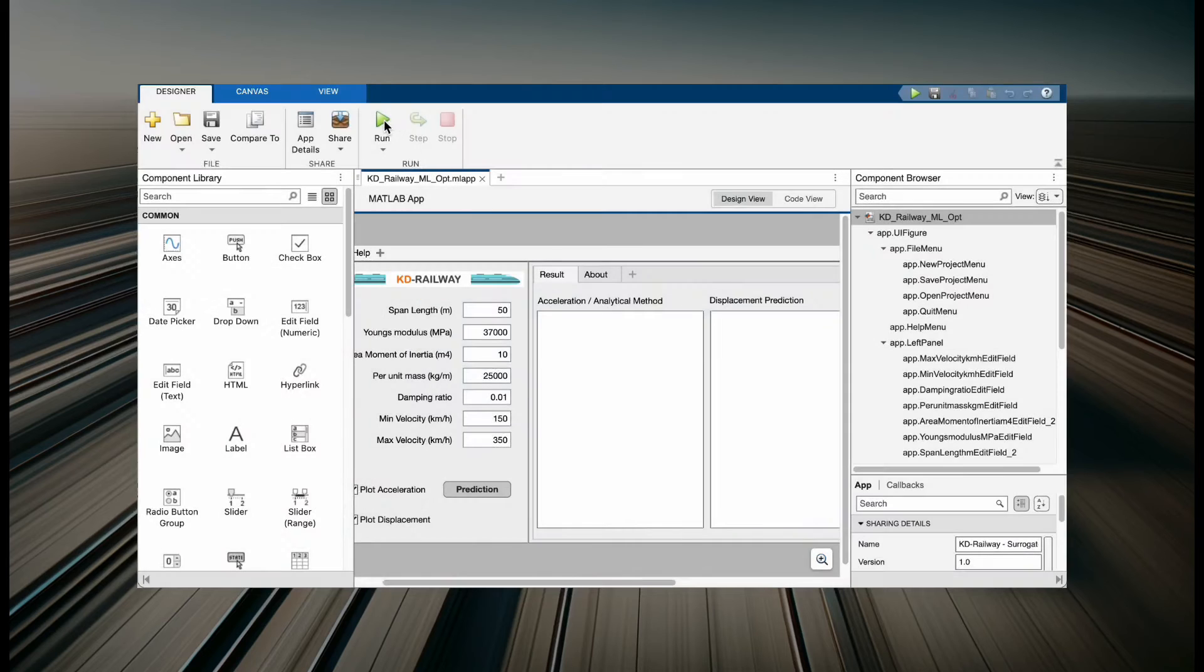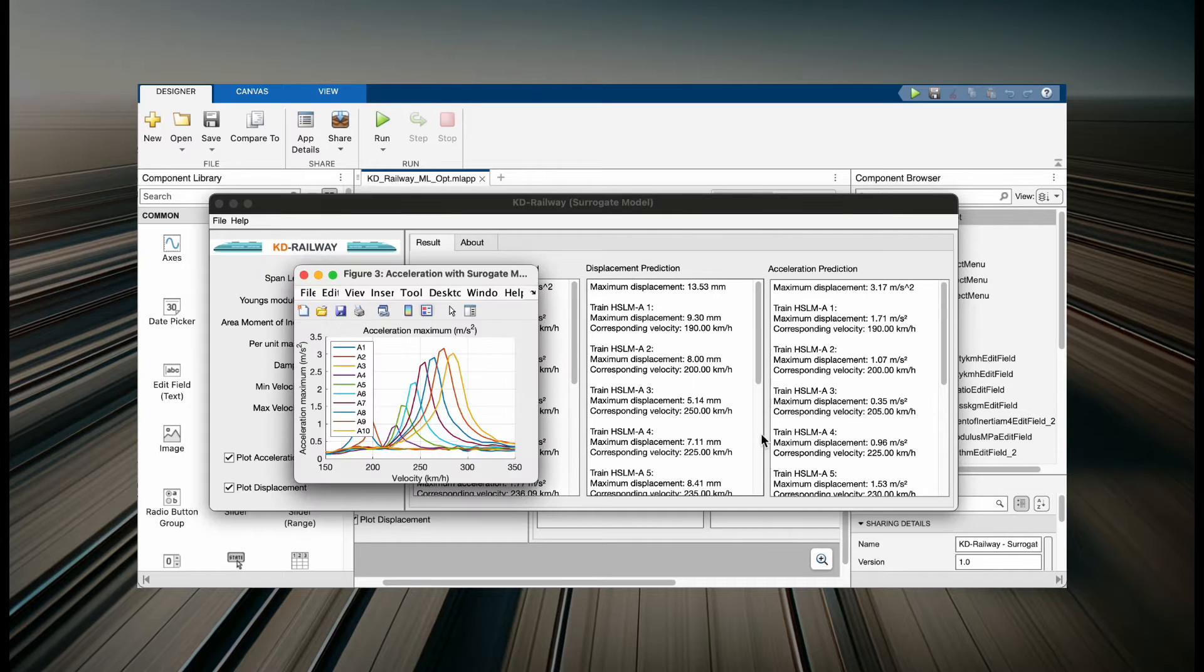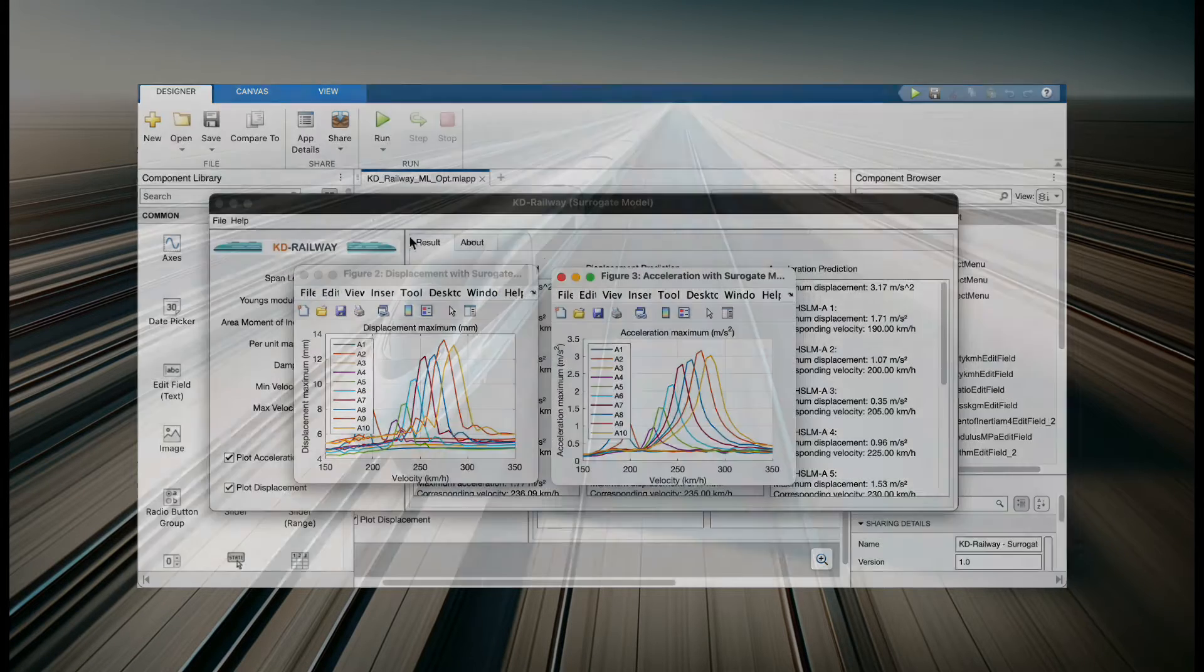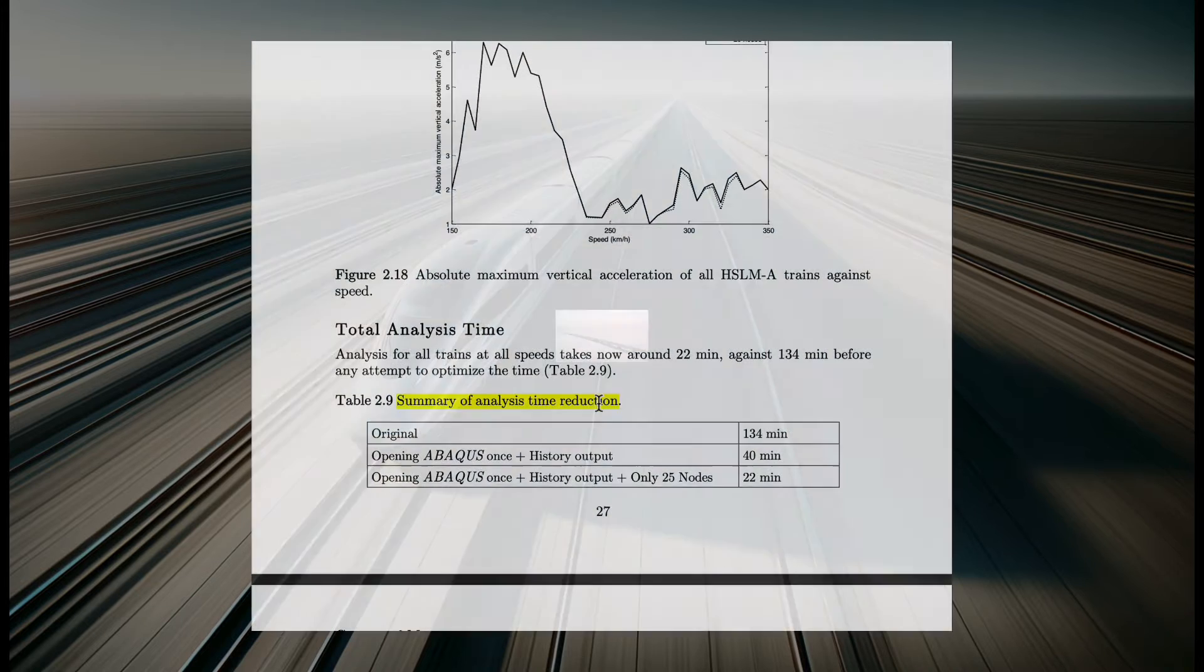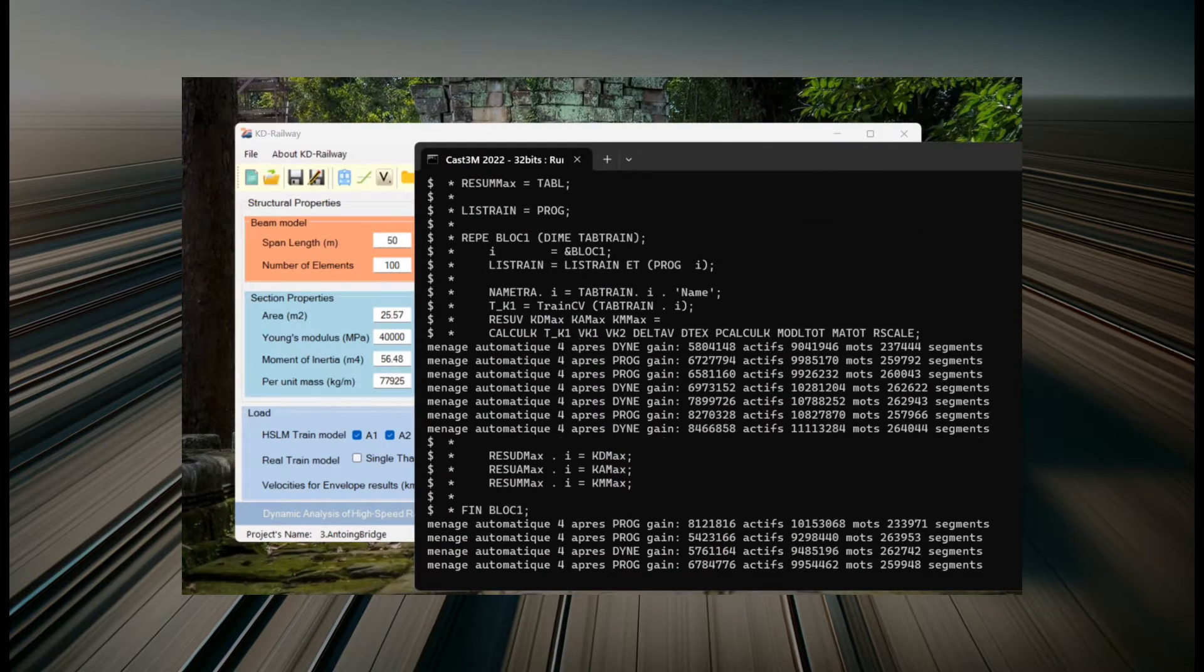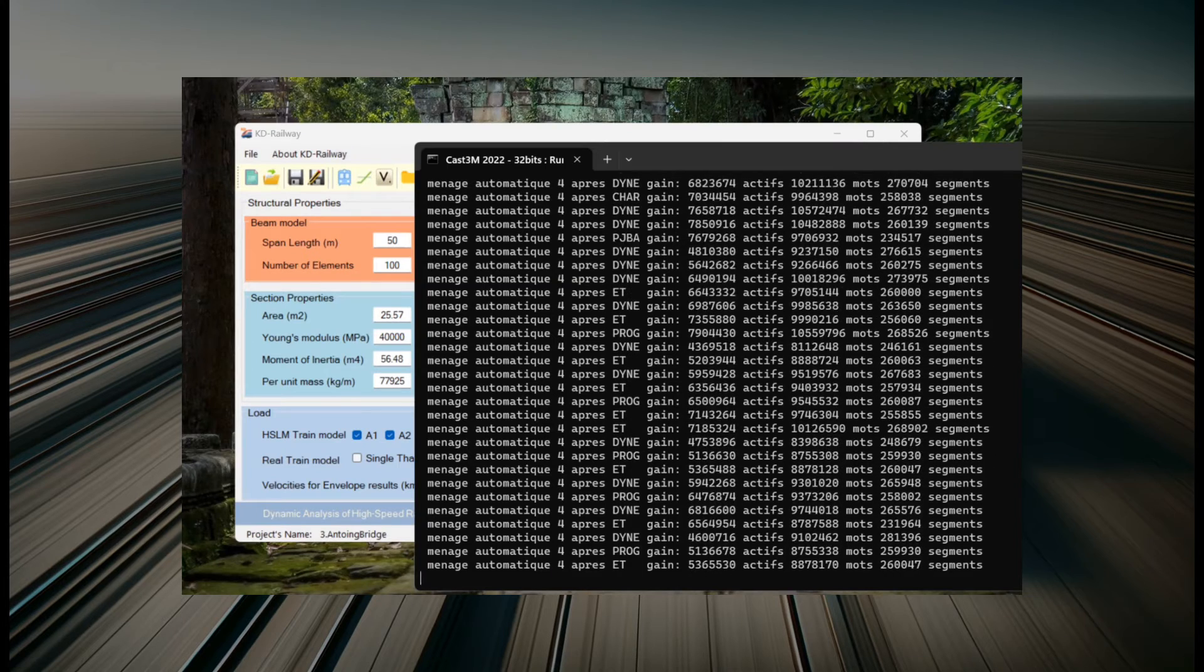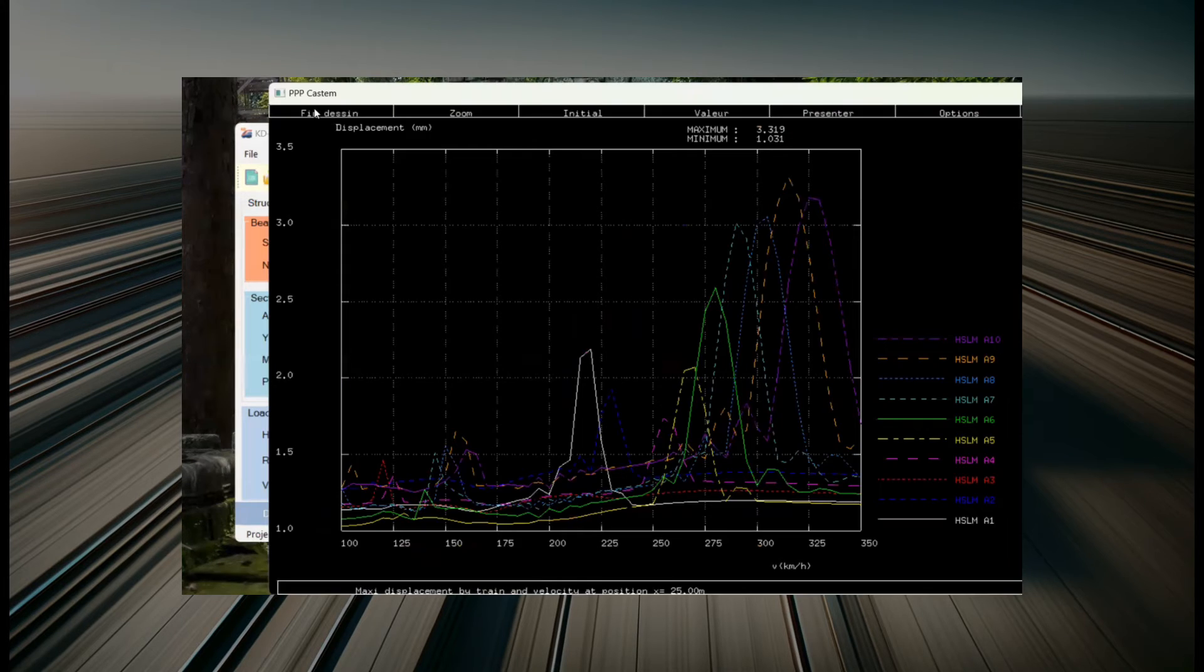Now here's the breakthrough. Our research team has developed a new dynamic analysis model that significantly speeds up the process. Let's put it in perspective. Normally, using ANSYS software for detailed simulations, it takes about 22 minutes to analyze 10 trains at different speeds. But our team introduced the KD Railway software. Combined with CAS 3M and fast calculations all at once, we brought that time down to just 20 seconds.